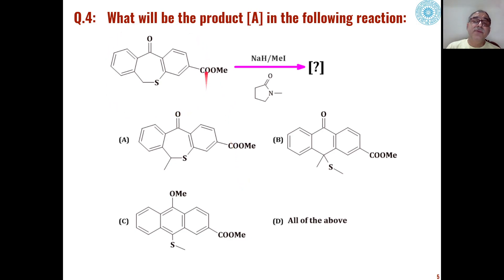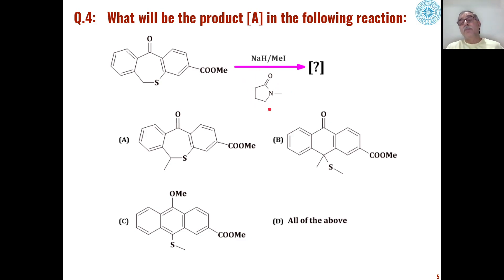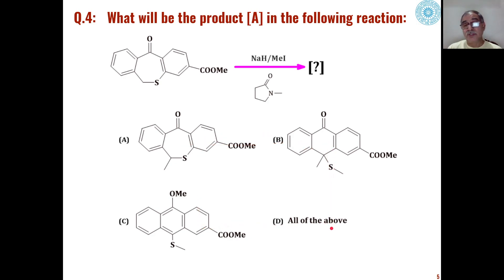The fourth problem involves these types of heterocyclic cyclic sulfides when they are reacted with sodium hydride and methyl iodide in presence of N-methylpyrrolidinone. What is the product formed out of these four choices?